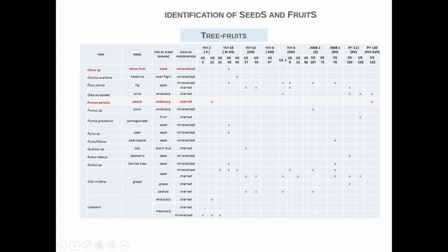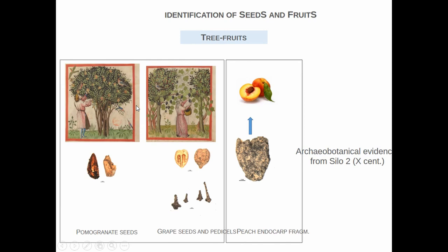Now we turn to tree fruits, which are another important group of plants connected to the Islamic world. I show you the tree fruits marked by Watson, and peach from Mazzara. Also in Mazara, we find other tree fruits — pomegranate seeds. Pomegranate is connected to the Mediterranean world. But it is important to build a database combining all the tree fruits together, because it is a signal of fruit cultivation culture, not any single fruit species alone.